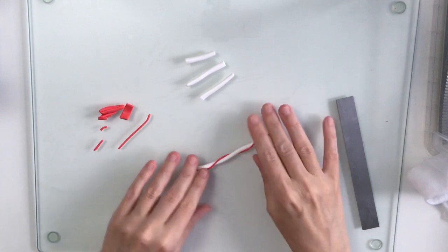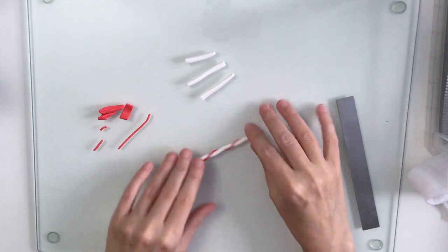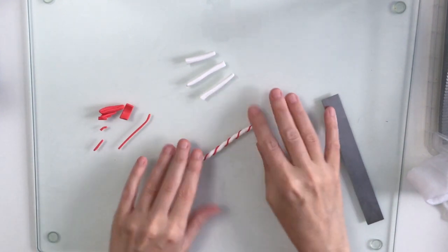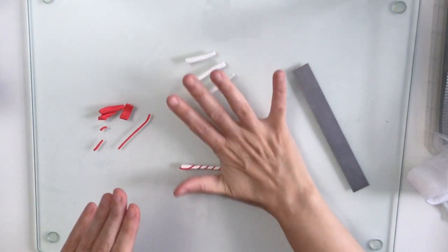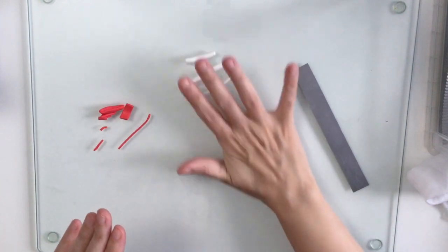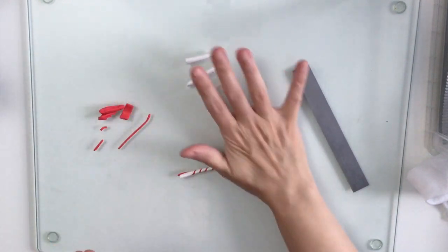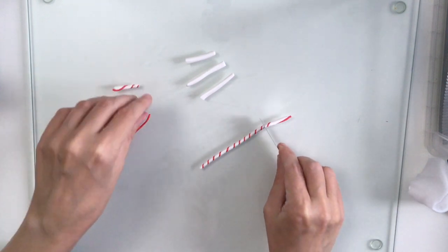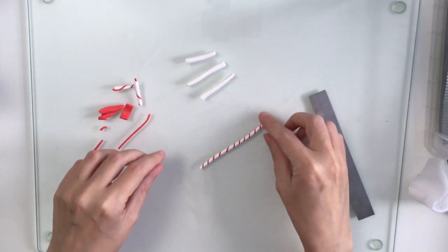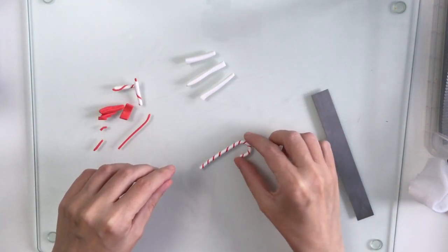Taking both hands at each end, twist the clay. I'm using the palm of my hand here to flatten the clay, to ensure that it's all sticking together. Then take the ends off and curve the top like a walking stick or an umbrella.